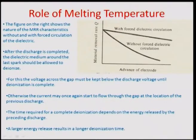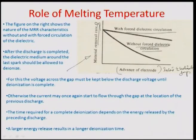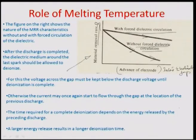Looking at the trend comparing with and without forced dielectric circulation, the material removal rate without forced circulation drops quickly as the electrodes advance toward each other (decreasing inter-electrode gap, IEG). With forced dielectric circulation, the decline in MRR is arrested — it does not fall as fast.